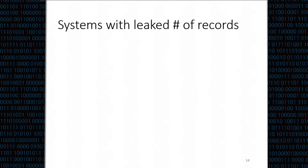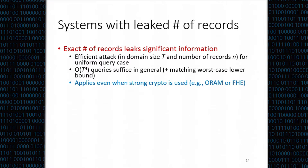What we showed is that if an outsourced database system leaks the exact number of records returned when queried, we can mount efficient attacks that completely reconstruct the index attribute, needing only t⁴ queries. This attack applies regardless of what cryptography is used—even with ORAM or fully homomorphic encryption, we can still reconstruct the index attribute, because the only information used is the number of records returned.